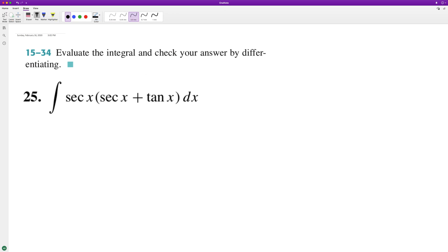So what we end up with is secant squared x plus secant, which is the same thing as cosine of x, or excuse me, one over cosine of x, and tangent is sine of x over cosine of x.